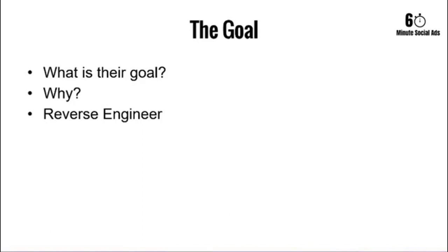For yourself, take a pad of paper and figure out your revenue goal, how many social media leads you need to get there, and then reverse engineer it. For a client, pull this information out in the audit call or second call. Step one is figuring out their goal, their why, and reverse engineering — asking what would be the impact on your business if we got you $35,000 a month in revenue.